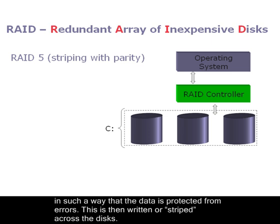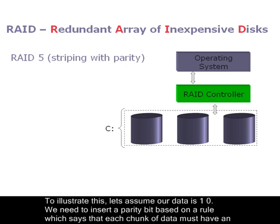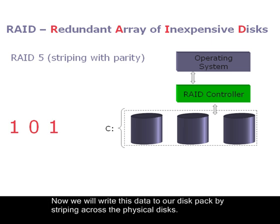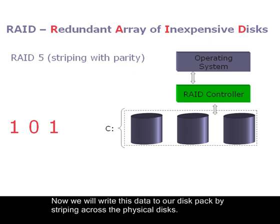The data is then written, or striped, across the disks. To illustrate this, let's assume our data is 1, 0. We need to insert a parity bit based on a rule which says that each chunk of data must have an even number of ones. So in this case, we must add a 1. Now we will write the data to our disk pack by striping across the physical disks. This process works for any data — we are using 1, 0 simply as an example.